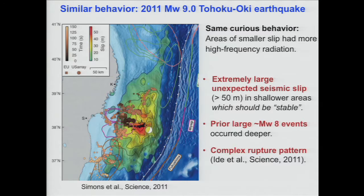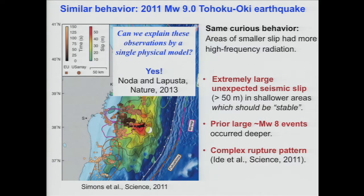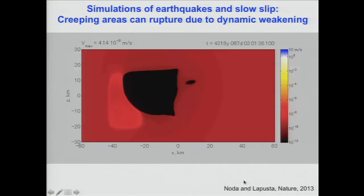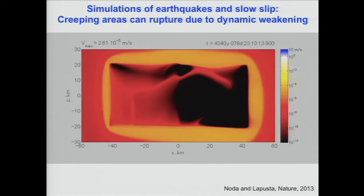There were all these observations: extremely large slip and complex rupture patterns. It turns out that if we incorporate these fluid-like effects in our model, we can explain these observations. In this model, we take two patches on the fault. One patch has these properties like measured in the southern part of the Chi-Chi earthquake — weakening at slow slip rates and maybe a little more weakening at fast slip rates. This other patch has interesting properties: strengthening at slow slip rates, so it should be stable, but seismically it can dramatically weaken. We can ask what would be the consequences of these properties.